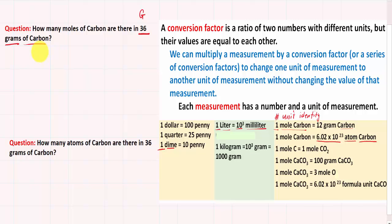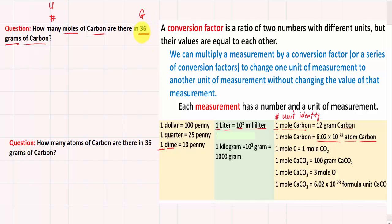What about our unknown? What are we trying to look for? The question asks: how many moles of carbon? We don't know the number, so we label it as unknown with the letter U. The unit is mole, and the identity of the substance is carbon. Let's go back and look at our conversion factor. Do we have something that relates grams of carbon to moles of carbon? I only care about the unit and the identity. The most important things are the unit and the identity of the substance.